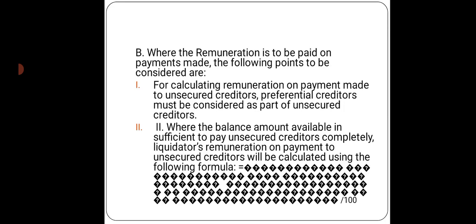How the remuneration can be calculated is important because the liquidator will take the payment before the unsecured creditors. For calculating the liquidator's remuneration on payment to unsecured creditors, the formula is: amount available for unsecured creditors multiplied by the remuneration rate, divided by 100. This is the formula for calculating the liquidator's remuneration.